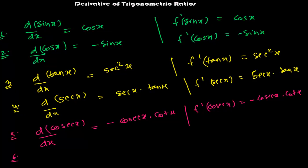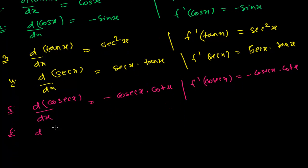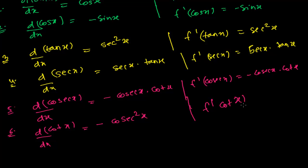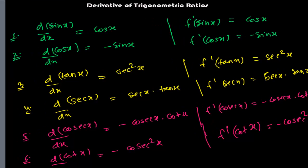And the sixth one — please learn this, it's very important: the derivative of cot x is −csc²x. In function notation: f'(cot x) = −csc²x. Please completely memorize all six of these formulas before going on to solve derivatives of trigonometric functions.